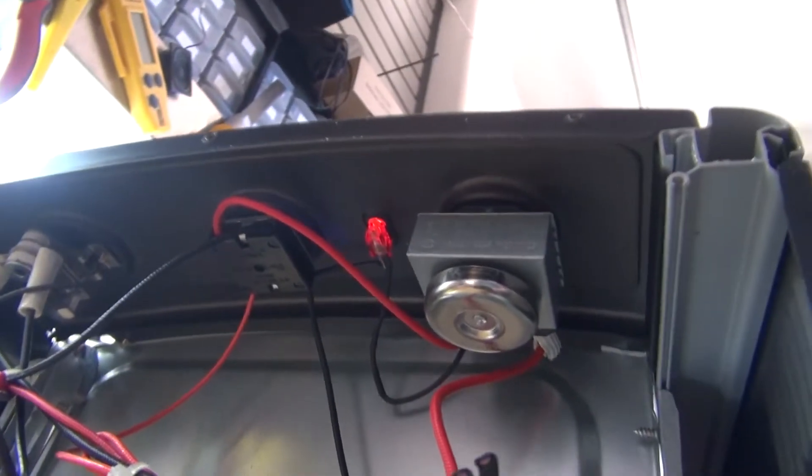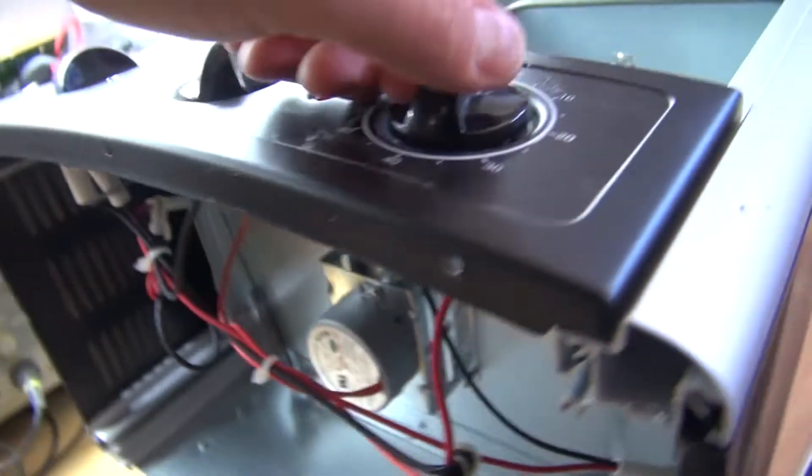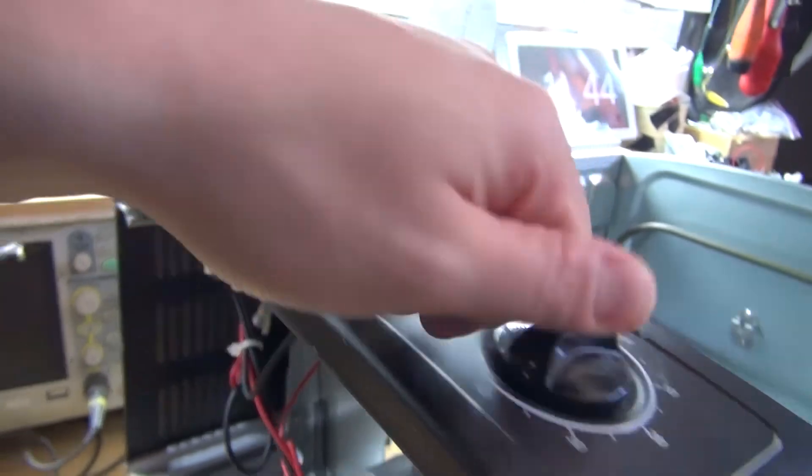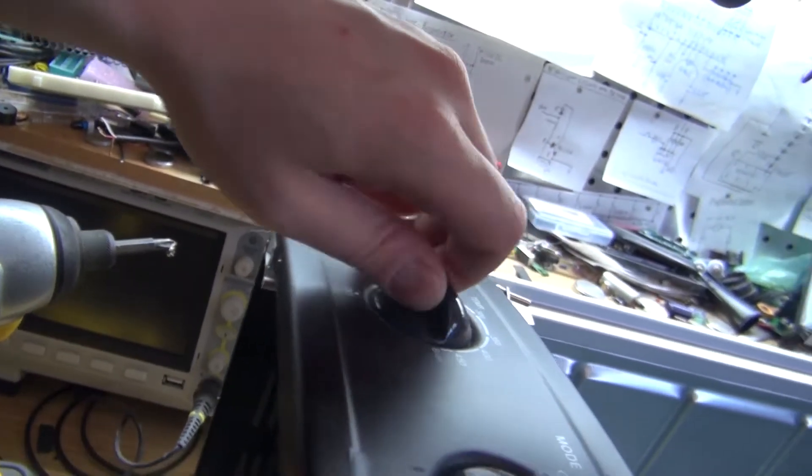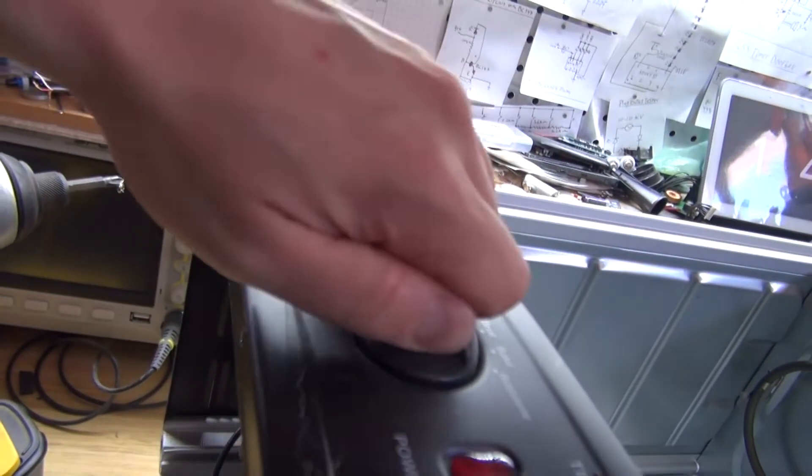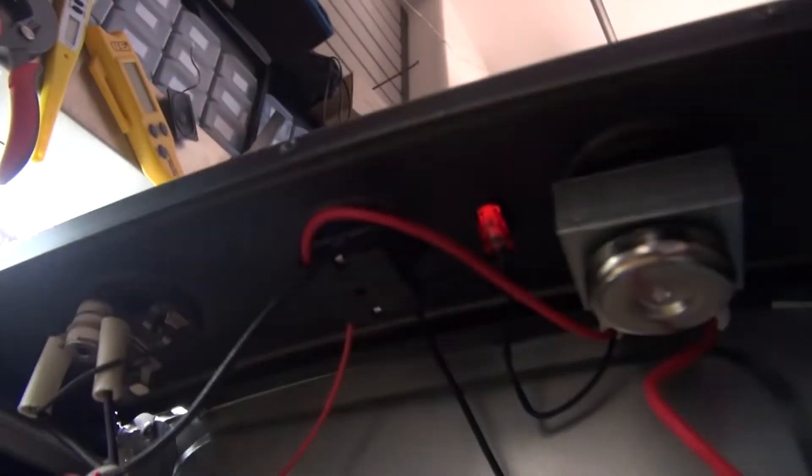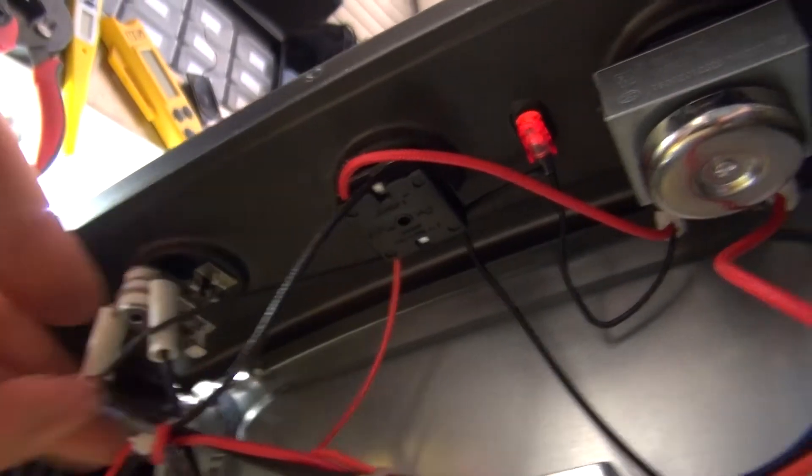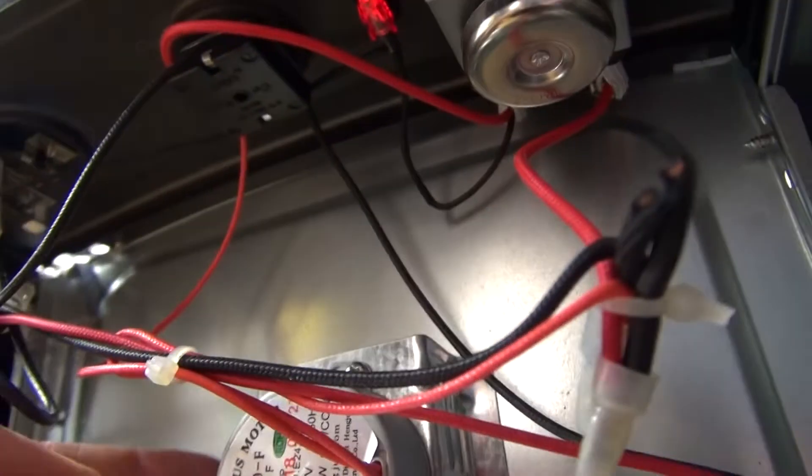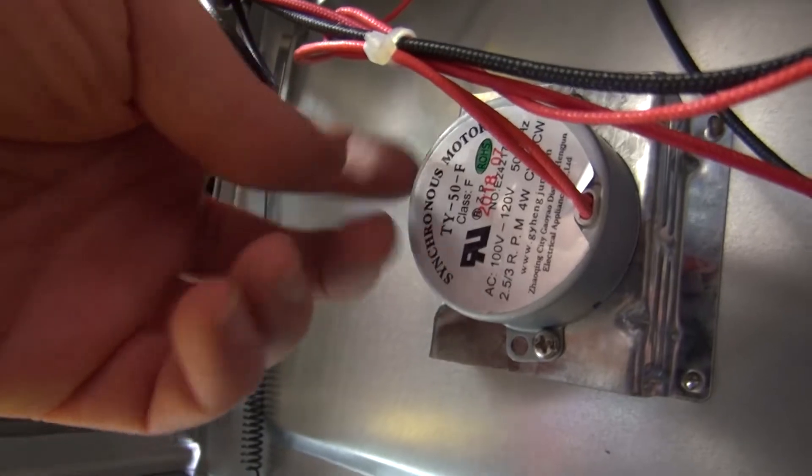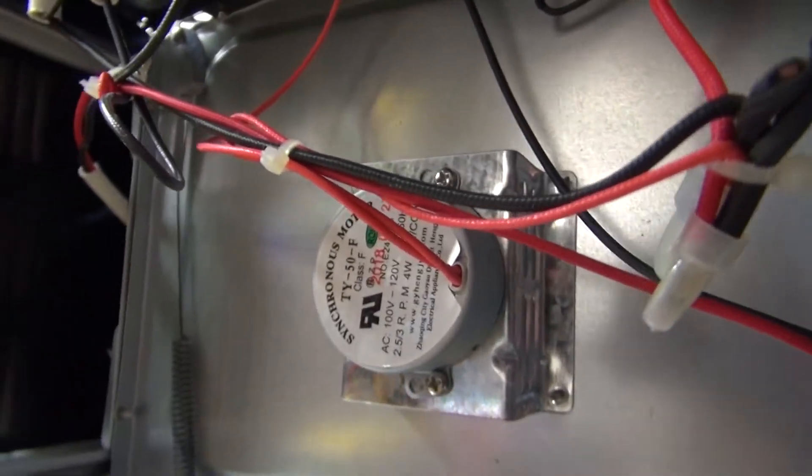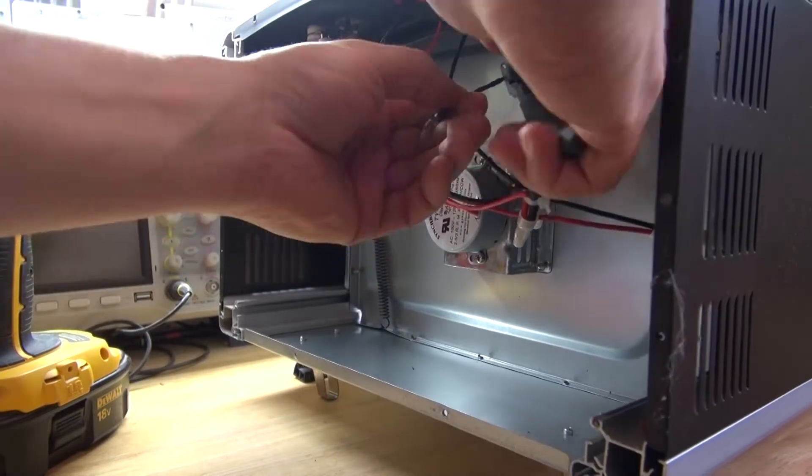And as you can see, here are some very simple and interesting components. This little timer seems very interesting. This little knob here, changing the temperature, and this little switch that changes different modes. All very interesting. And what I like the most is this AC gear motor. AC gear motors are very interesting, and they can also be very useful.